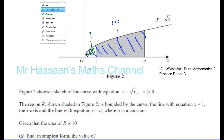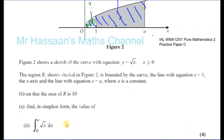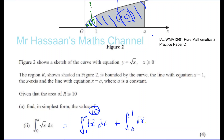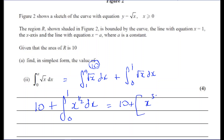So what we have is the integral between 1 and A of root x dx, which equals 10. Plus the integral between 0 and 1 of the square root of x dx. So it's going to be 10 plus the integral of x to the power of a half dx, which gives 10 plus x to the power of 3 over 2 divided by 3 over 2 — that's multiplied by 2 over 3 — between 0 and 1. Substituting: 2 thirds times 1 minus 0, so the answer is 10 and 2 thirds.